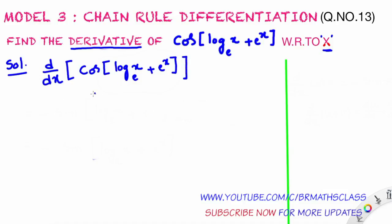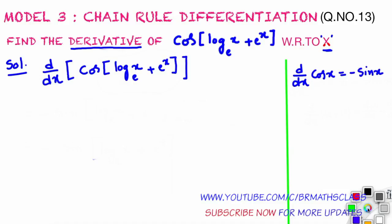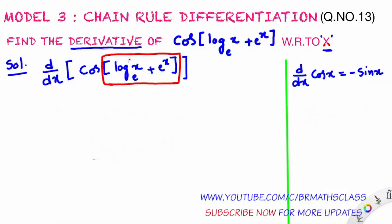We don't have any direct formula for the derivative of this expression, but we know the derivative of cos x. What is the derivative of cos x? The derivative of cos x is minus sin x. We know this formula. Now observe the expression we need to differentiate: cos of log x base e plus e power x. Imagine log x base e plus e power x as x — if you do that, it looks like cos x.